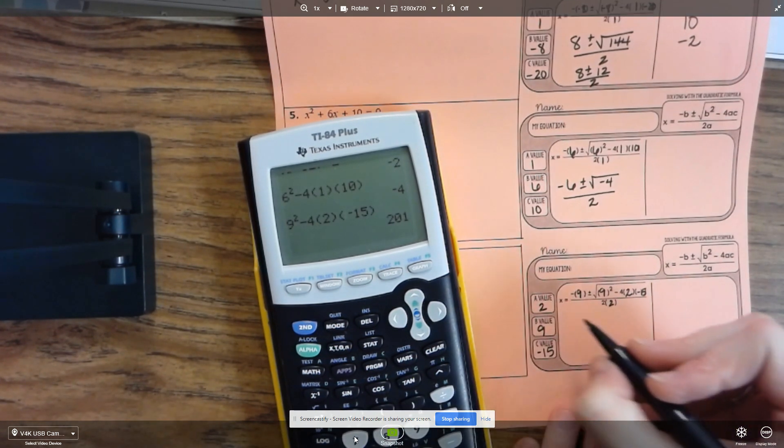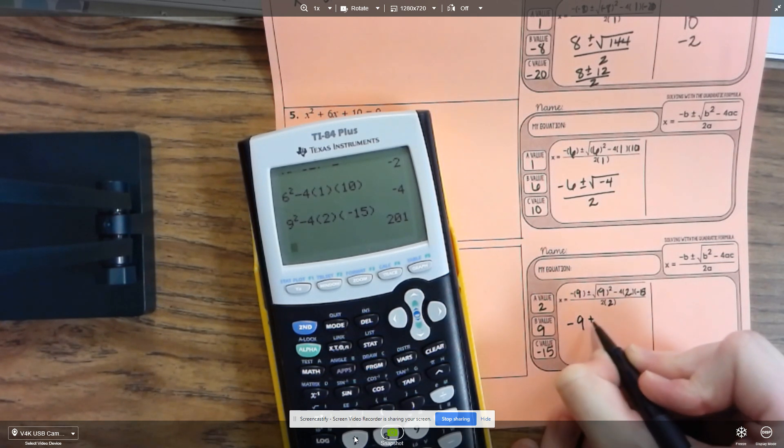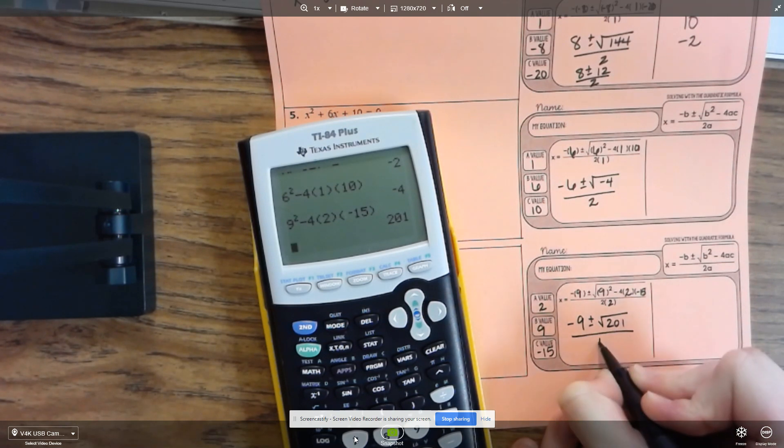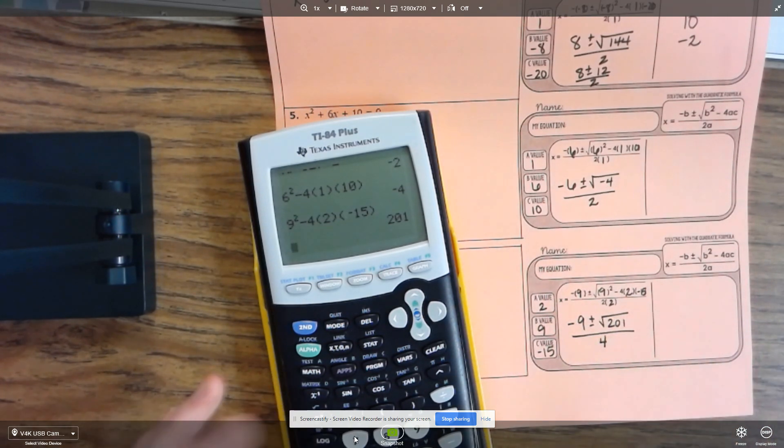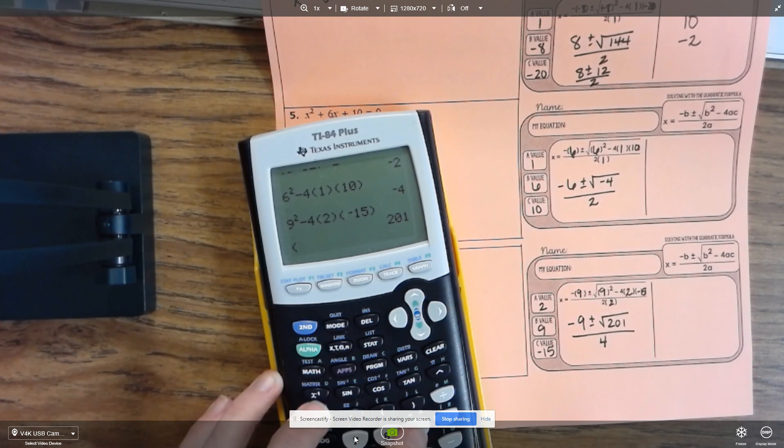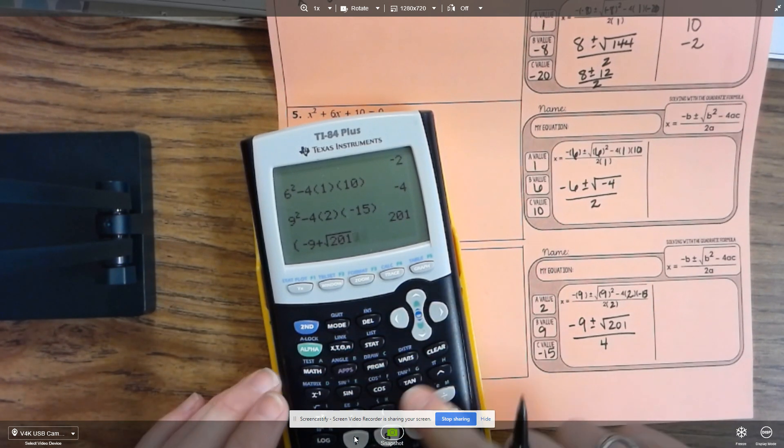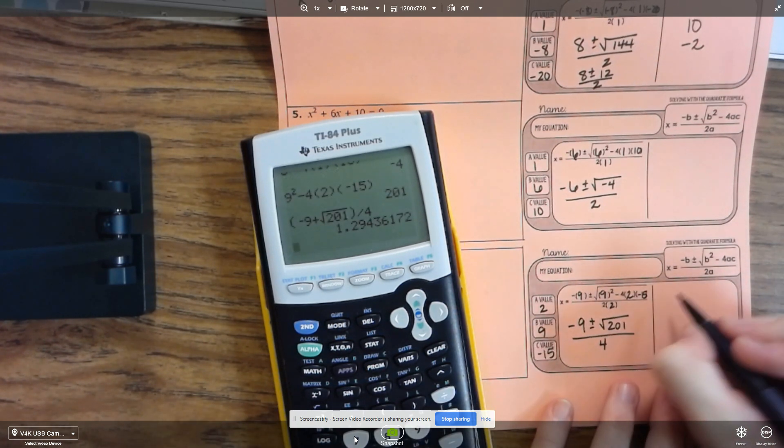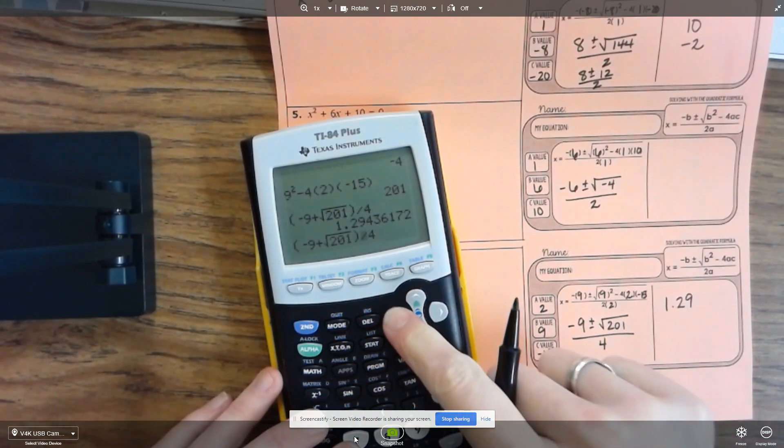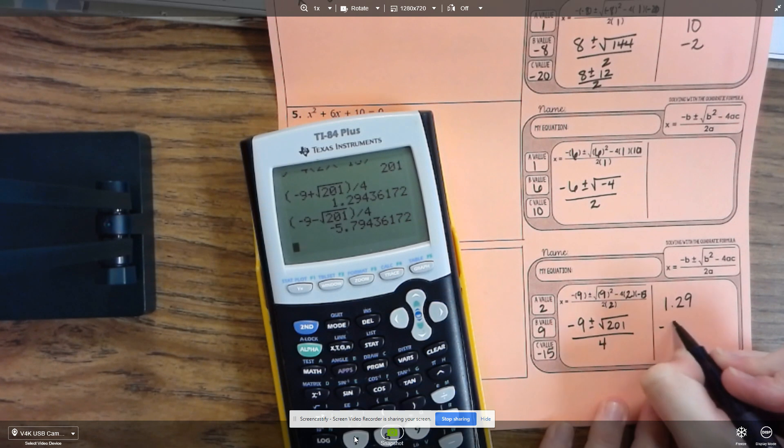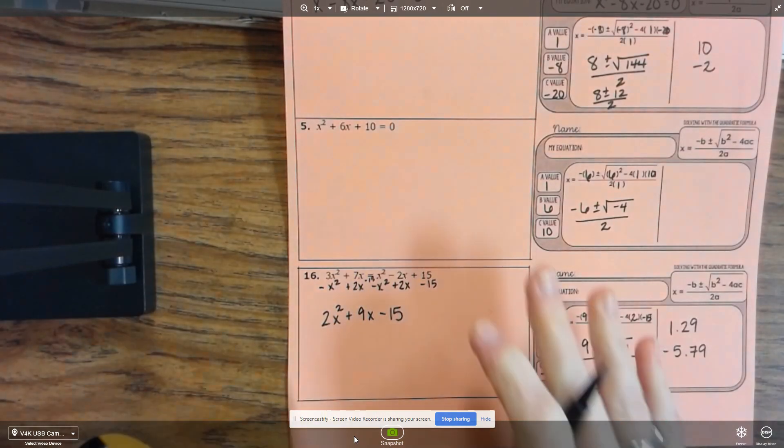It gives me the square root of 201, so I have negative 9 plus or minus the square root of 201 divided by 4. And then you can just work on a piece at a time. So negative 9 plus the square root of 201 divided by 4, and that gives me 1.29. And then I go back in and do the exact same thing, except this time I subtract, and I get negative 5.79. So that's it for this video.